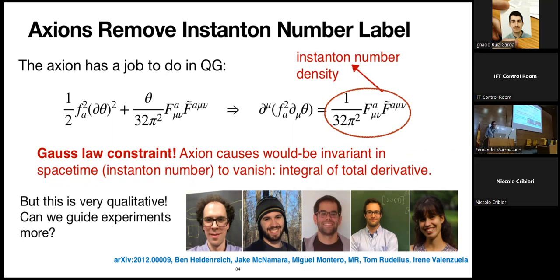Several of us participating in this workshop suggested we should think of the axion as a gauge field for what we call the minus-one-form Chern-Simons symmetry — a fancy name for the thing that counts instantons. But this is very qualitative — this says axions seem to have a good reason to exist in quantum gravity, but we would like to give better guidance to experiments: not just that axions should exist, but something about their mass and couplings to narrow down where they might be.